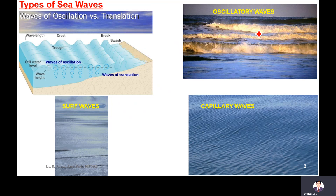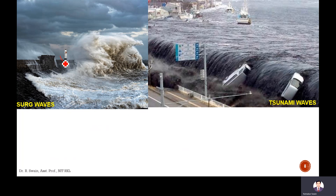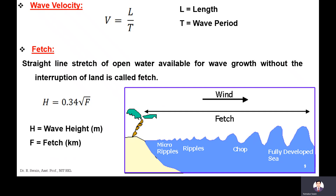You can see oscillatory waves here — surf waves have low height but long wavelength. This is the capillary wave. Here is the translatory wave, showing oscillation in the vertical direction and translation in the horizontal direction. This is the surge wave, which occurs due to cyclones — very high intensity and depth. And here is the tsunami wave, which occurs due to earthquake or volcanic eruption.